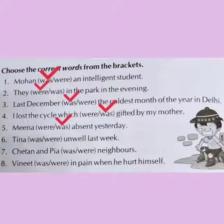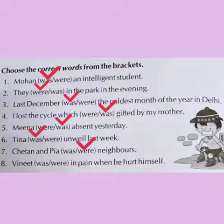Next: Tina was or were unwell last week. Tina is a singular subject, so we will use was. Tina was unwell last week. Next: Chetan and Pia — was or were — neighbors. Subject is Chetan and Pia — two persons, so it is a plural subject. With plural subject we will use were. Chetan and Pia were neighbors. Last sentence: Vineet — was or were — in pain when he hurt himself. Vineet is a singular subject, so we will use was. Vineet was in pain when he hurt himself.